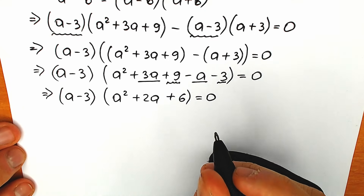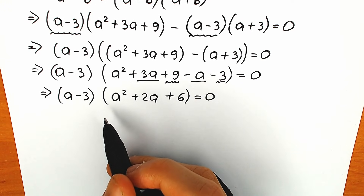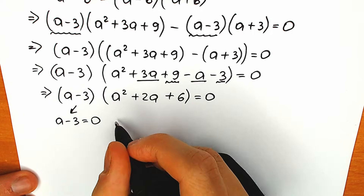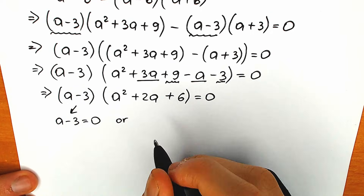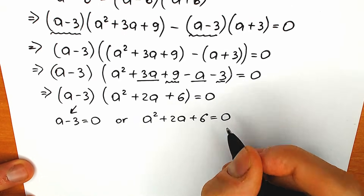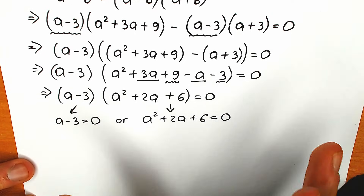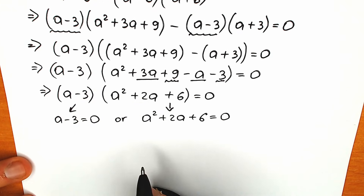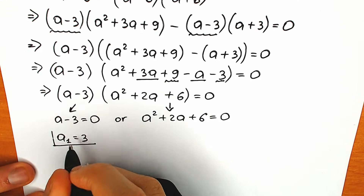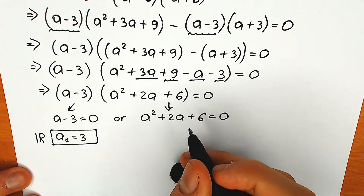We have factored our equation into a product of two parentheses. From algebra, a product equals zero when either factor is zero. So either (a minus 3) equals zero, giving us a₁ equals 3 — which we can solve instantly — or (a² plus 2a plus 6) equals zero. So a₁ equals 3 is our first real number root.